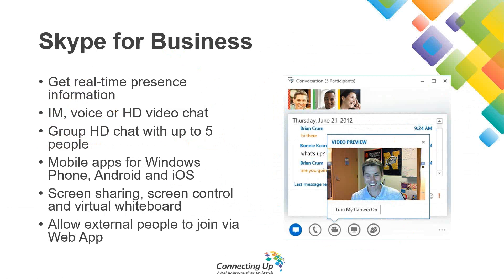Skype for Business integrates with Exchange and knows when you're in a meeting, putting real-time presence information into your feed. If I tried to set a meeting with Tori right now, I'd see in her calendar that she's got a webinar meeting, so it tells me she's busy — I can see a little red indicator showing 'busy'. A green indicator means the person is available. A yellow indicator means that person doesn't have anything in their calendar but has been away from their computer for 15 minutes — they're probably not around but I can try.